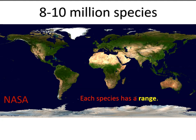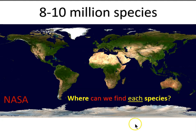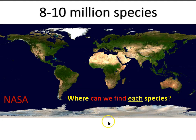Today it's estimated there are some 8 to 10 million species on the planet. Each species has a range — where we can find members of that species. Some have a wide range and some have a restricted geographic range. Surprisingly, Darwin is going to claim that the answer to the question of where we can find each species sheds light on the question of species origin.